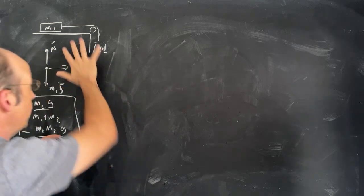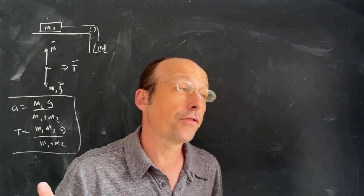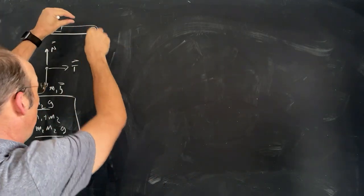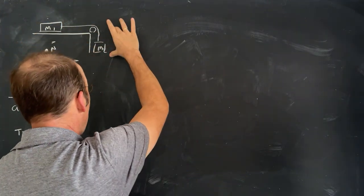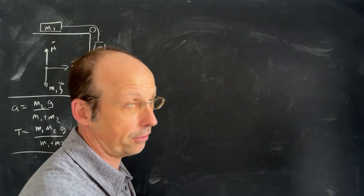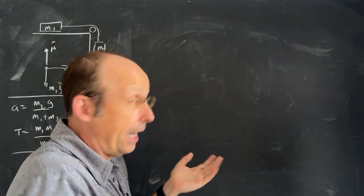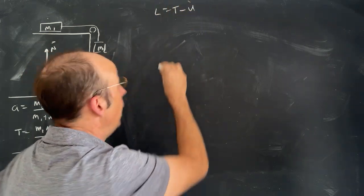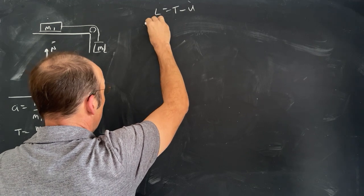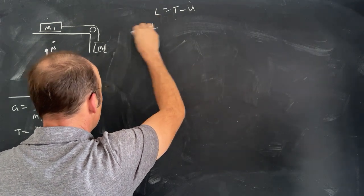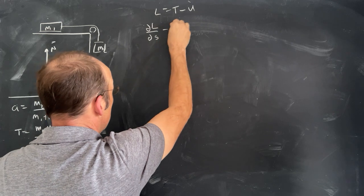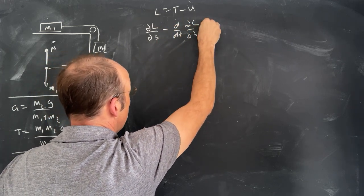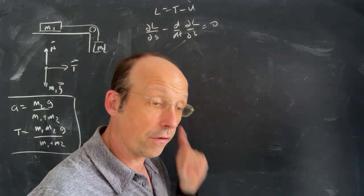Now we really want to do the Lagrangian mechanics. Remember: for the standard Lagrangian approach, how many degrees of freedom do I have? Just one. This mass moves that way, that one moves the same amount. I could just use s, the distance from the top, as my degree of freedom. I'd write L = T − U, apply the Euler-Lagrange equation with variable s, and get the differential equation.